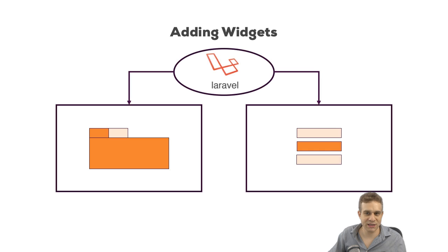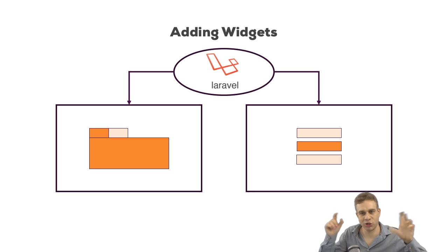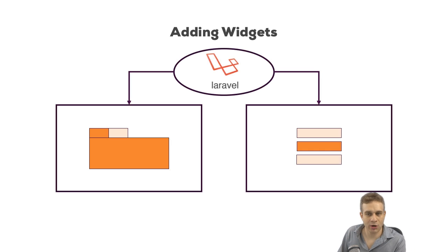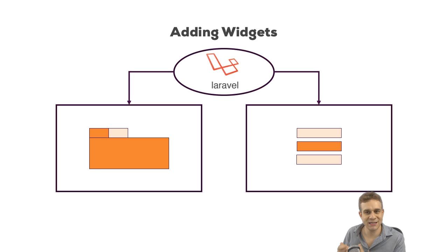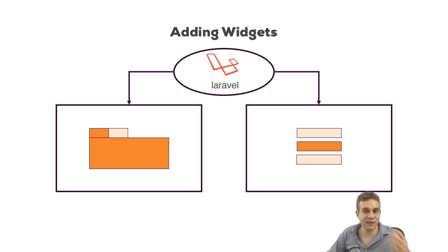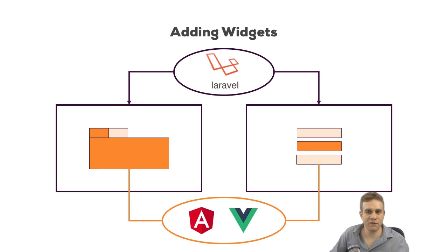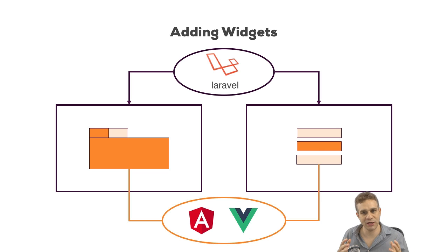we might use some widgets — some tabs we can click which then show different content, or some dropdown or whatever. Those widgets are obviously powered by JavaScript because they need to edit the DOM at runtime. And instead of building them with vanilla JavaScript or jQuery, we could use Angular 2 or Vue.js to build those widgets.